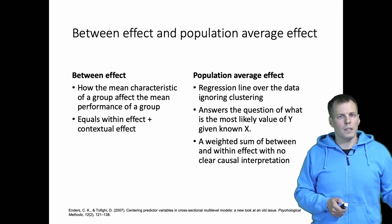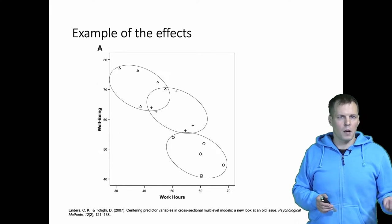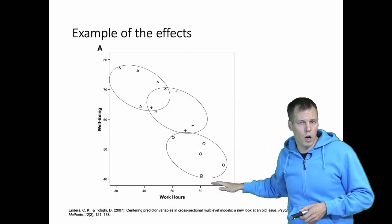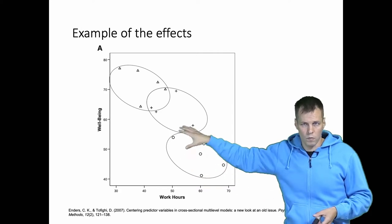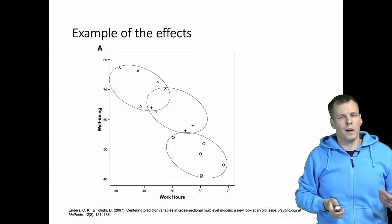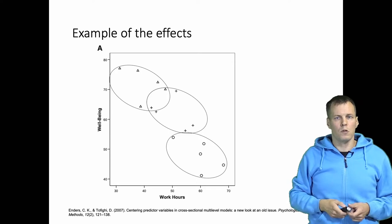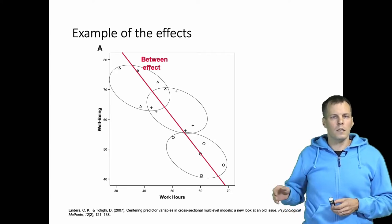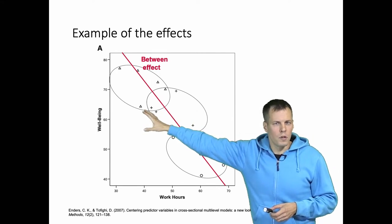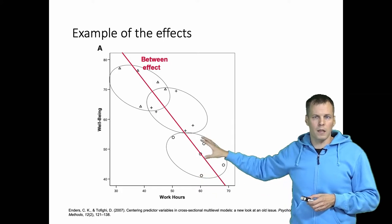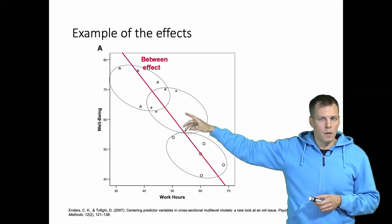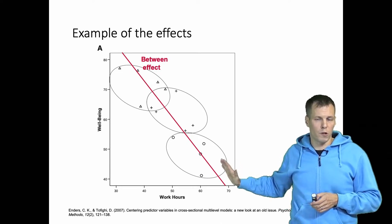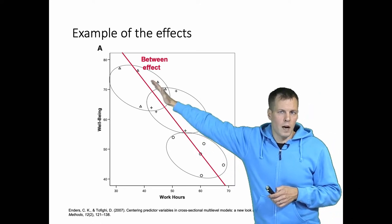Let's take a look at an example of these effects from a paper by Enders and Tofighi in Psychological Methods. They have data with individual's well-being on the y-axis and individual's work hours on the x-axis, and they have three individuals observed over five weeks — so five repeated observations of each individual. The between effect shows how the mean well-being of a person depends on the mean work hours of a person. We calculate means for each of the three individuals for both variables and run a regression on those three cluster means.